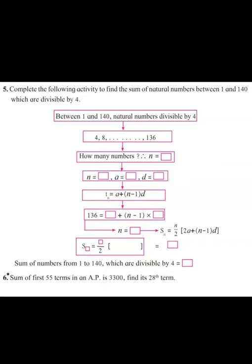We have to find the sum of natural numbers between 1 and 140 which are divisible by 4. The numbers between 1 and 140 which are natural numbers and divisible by 4 are: the first number is 4, then 8, then 12, then 16, and so on. The last number before 140 which is divisible by 4 is 136.